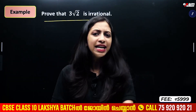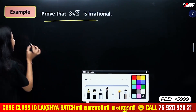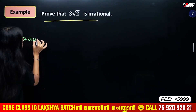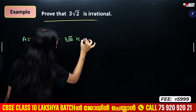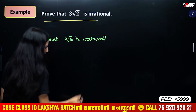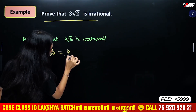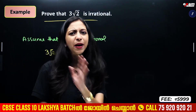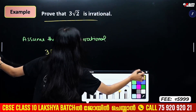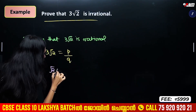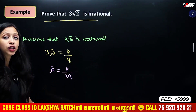Now, we will prove that 3 root 2 is irrational. We assume that 3 root 2 is rational, meaning it is in P by Q format. Rearranging, root 2 is equal to P by 3Q.